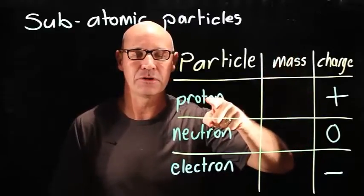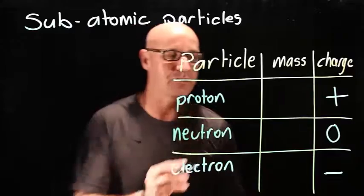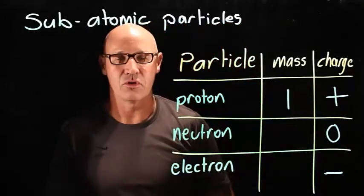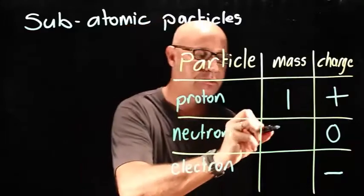And a proton has an atomic mass of 1. A neutron also has an atomic mass of 1.